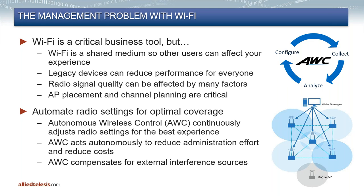We have a tool called AWC — Autonomous Wireless Controller — which reduces the amount of manual effort required to set up and maintain your wireless network. What AWC does is continuously adjust the radio settings for the best experience. It monitors signal quality from all the APs, monitors for interference, and can adjust signal strength and channels depending on external factors. It does this automatically, therefore reducing your administration and reducing your costs — freeing up your IT resources to do something more proactive instead of a reactive maintenance task like this.